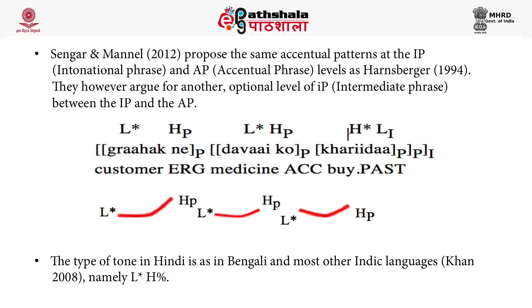In Hindi, Bengali, and most other Indic languages, the tonal pattern is LH, LH, LH followed by a boundary tone. The boundary tone need not be just an L tone — it can also be an H tone depending upon the type of utterance. If an utterance is an interrogation, the boundary tone is H, whereas if it is a declarative sentence, the boundary tone would be L. Sanger Manel proposed the same accentual patterns at the IP and AP levels, arguing for an optional intermediate phrase level between IP and AP.